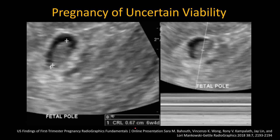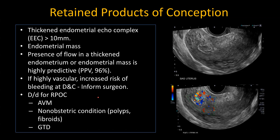For example, in a patient where the CRL is slightly less than 7 mm and you don't see a fetal heart rate, you would suggest a follow-up in two weeks to see if there is any heart rate. The next complication that you may see in pregnancy would be retained products of conception.